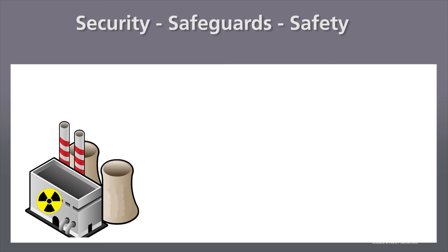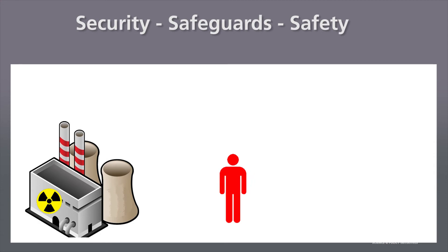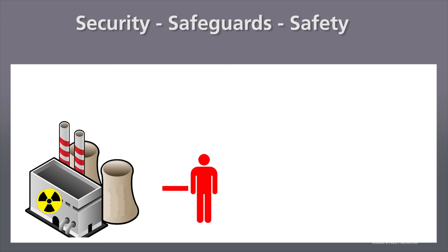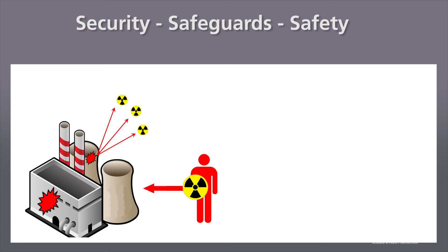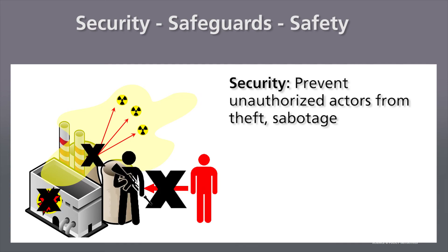Let's take a look at security first. Here we have a nuclear facility with some nuclear material in it, and here we have an unauthorized actor. It could be somebody totally unrelated to the facility, or somebody who has some access to the facility, but the actions they're going to take are not authorized. That could be theft of nuclear material, or it could be some sabotage intended to release radioactivity or nuclear material into the public. Security is meant to prevent this unauthorized actor from committing any of those acts.